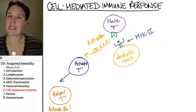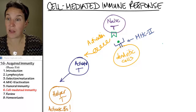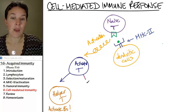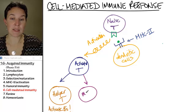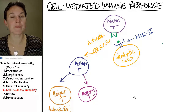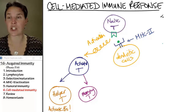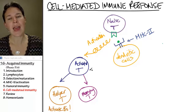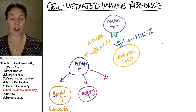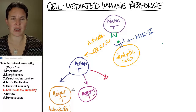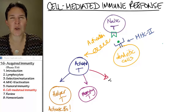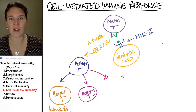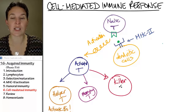Activated T's can also become memory T's. Memory T's are going to serve the same function as memory B cells. And activated T's — so far we've got a helper T, which is valuable for activating the humoral immune response, and memory T's to keep track of everything. But we don't really have anybody doing anything until we activate our killer T's — our killer or cytotoxic T cells.